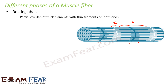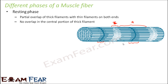So this region is all thin filaments, this region is all thick filaments, and in between there is some region where there is overlap of thick filaments with the thin filaments. In the resting phase, some portion is overlapping between the thick and thin filaments. However, there is no overlap in the central portion of the thick filaments.